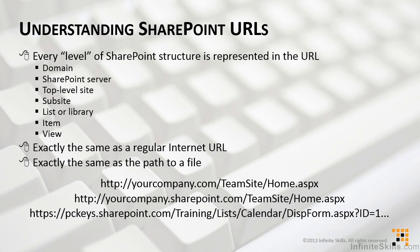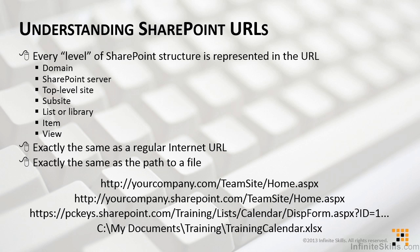Things really do get a lot easier. Even if you don't know everything there is to know, you can start to decipher URLs when you understand the syntax. Here's one last example — just a regular old file path, something stored on your C drive, in your My Documents folder, in a training subfolder. It's actually a file called trainingcalendar.xlsx, which means it's an Excel file. Notice the basic structure is the same: we move from a server through folders to a file displayed as a webpage, just like we would move from a computer hard drive through a series of folders to a file.